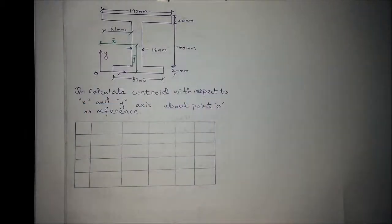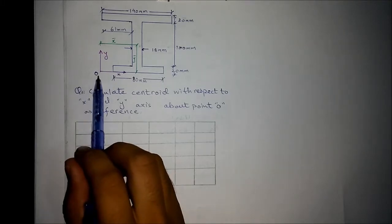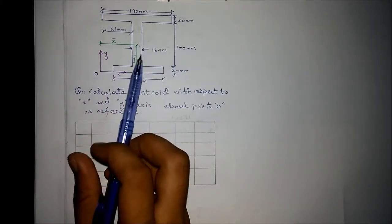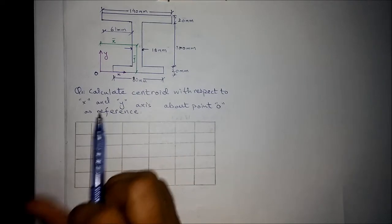In this second example of calculating centroid with respect to x and y axis about the origin (0,0), we are given with the following dimensions of these shapes.